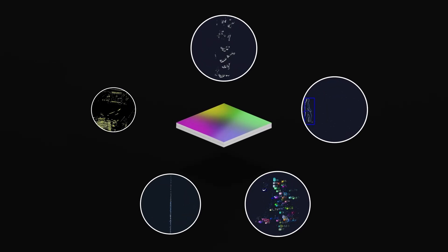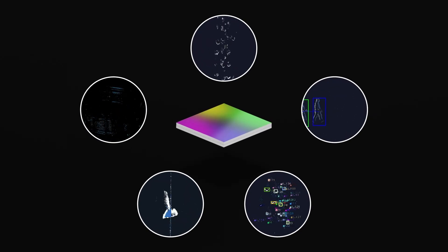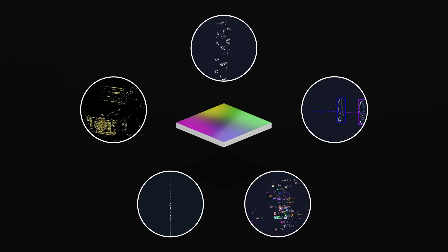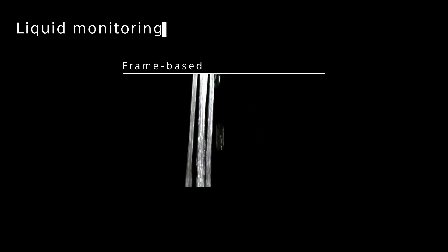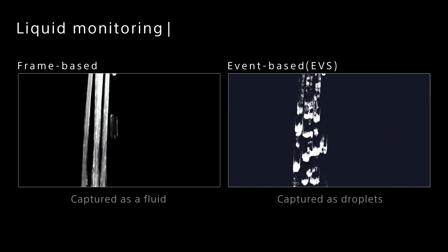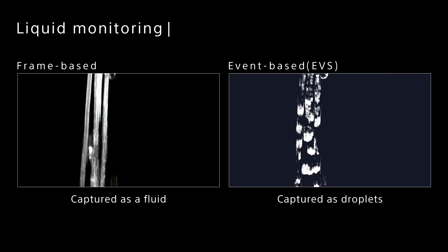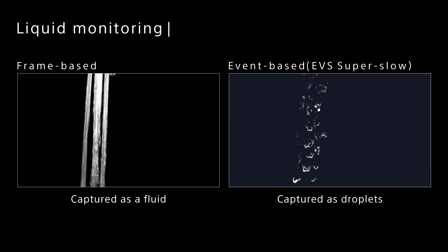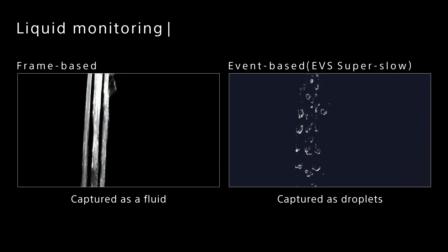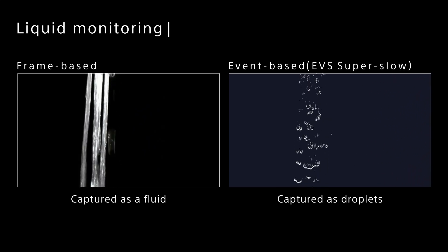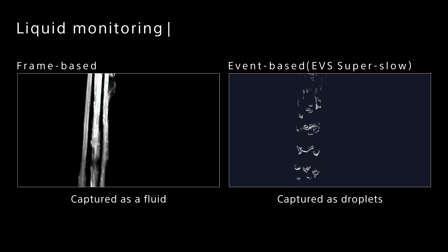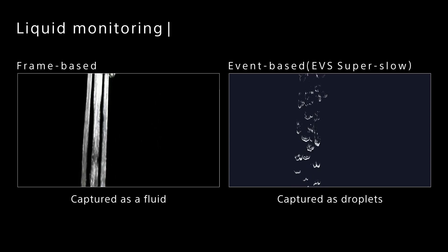To characterize the functionality of Sony's event-based vision sensor, let me introduce five application examples. The first is liquid monitoring. Water flowing out of the faucet can be captured as droplets. It is possible to extract images in slow motion and capture the image at a specific timestamp. This allows us to observe the movement of droplets, which is difficult to detect with conventional methods.